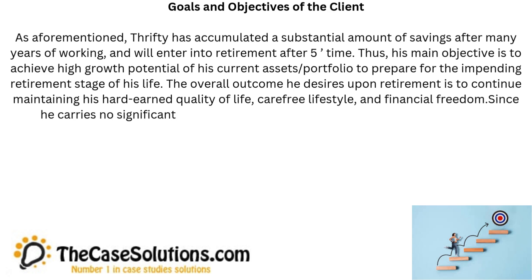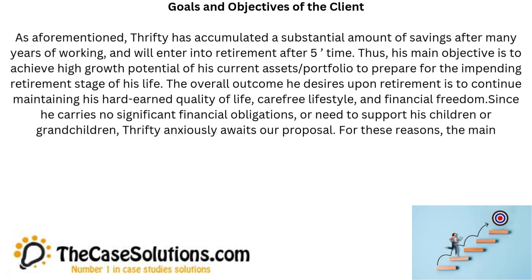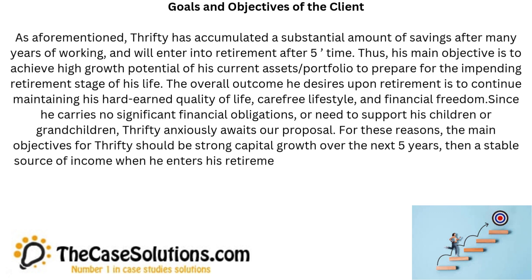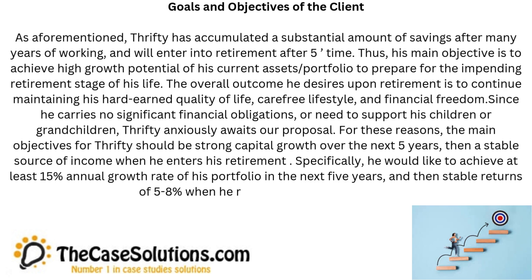Since he carries no significant financial obligations or need to support his children or grandchildren, Thrifty anxiously awaits our proposal. For these reasons, the main objectives for Thrifty should be strong capital growth over the next five years, then a stable source of income when he enters his retirement. Specifically, he would like to achieve at least 15% annual growth rate of his portfolio in the next five years, and then stable returns of 5-8% when he reaches retirement age.